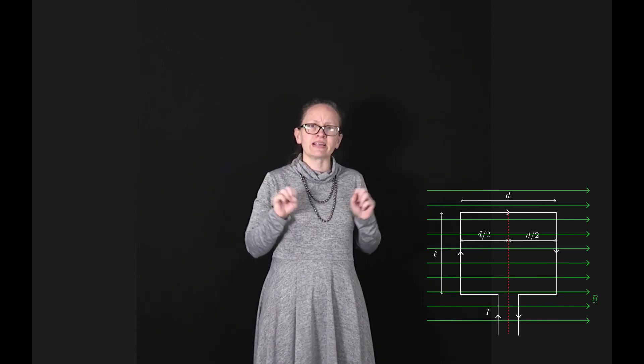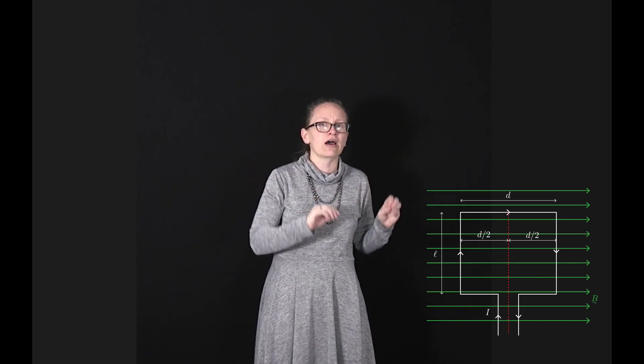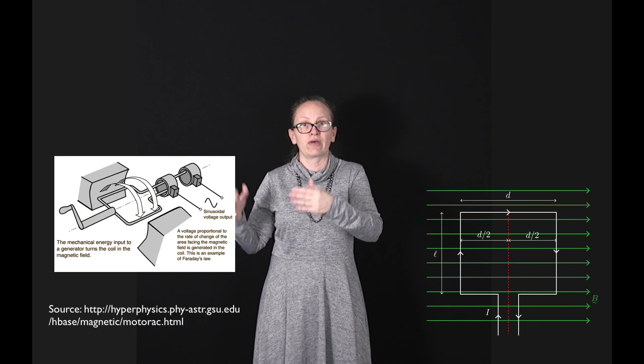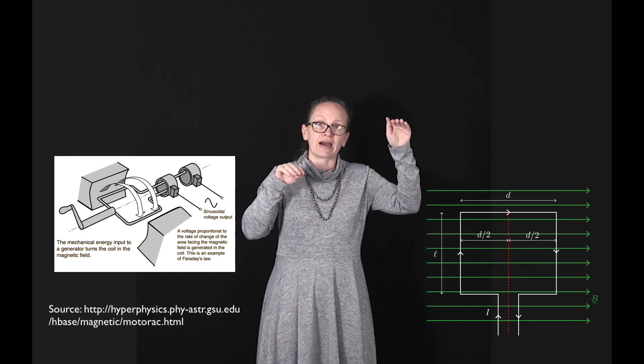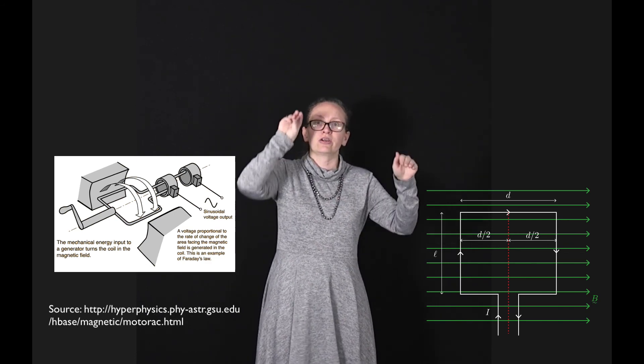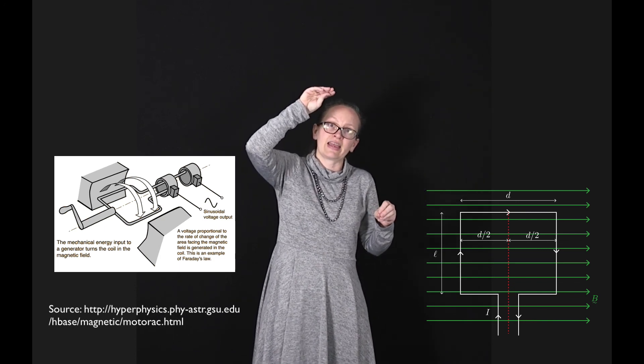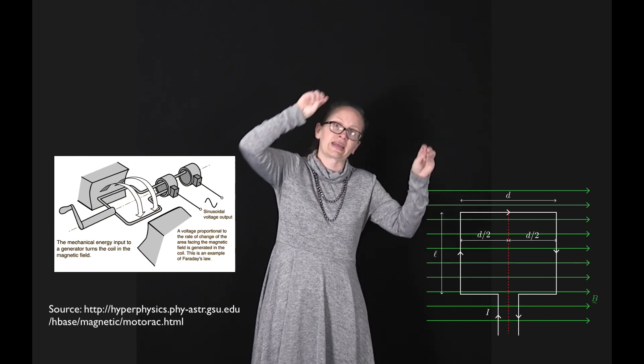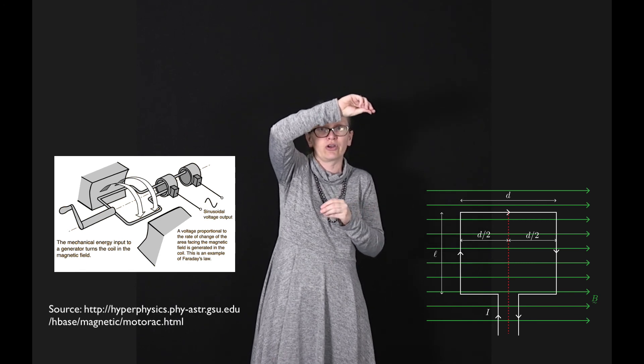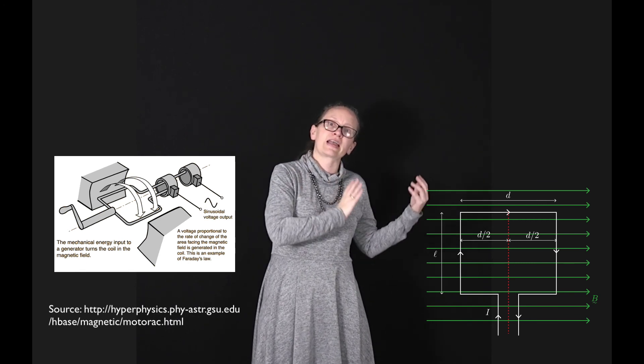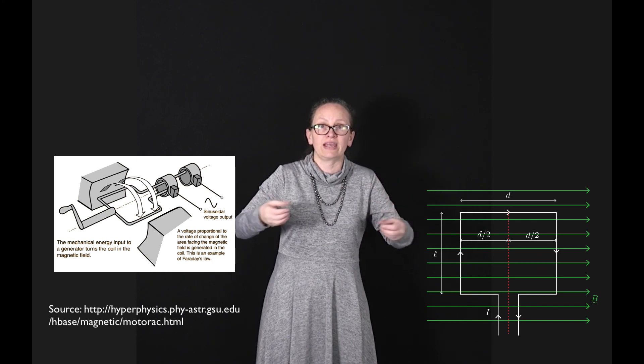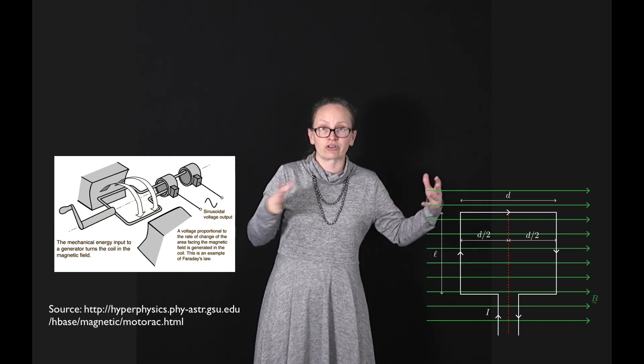Generators actually work much like motors but in reverse. In a generator, we create electrical energy by using mechanical energy to start a coil rotating through a magnetic field. Because of Faraday's law, we get an induced current flowing through the coil which we can harvest to create electrical energy.